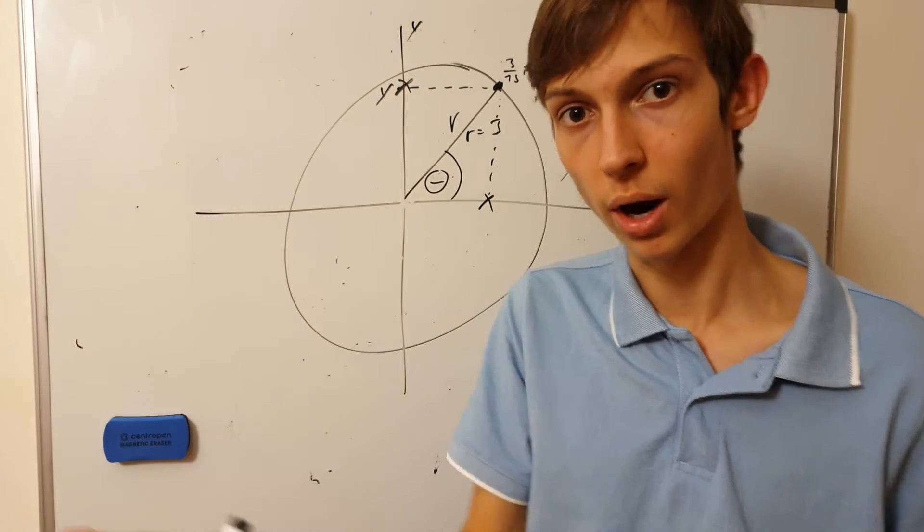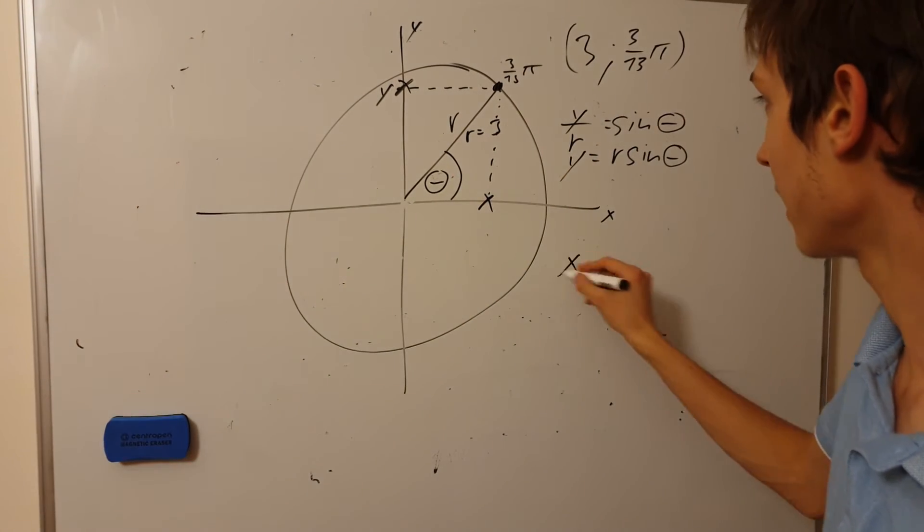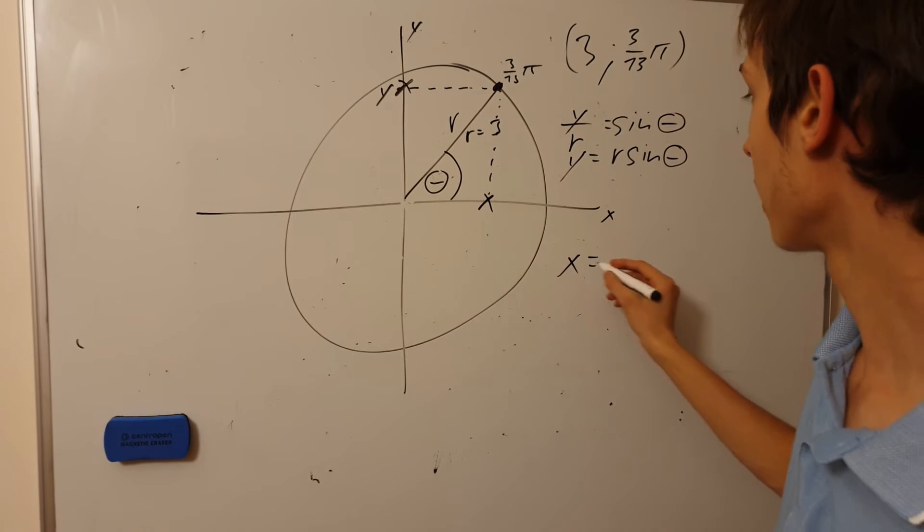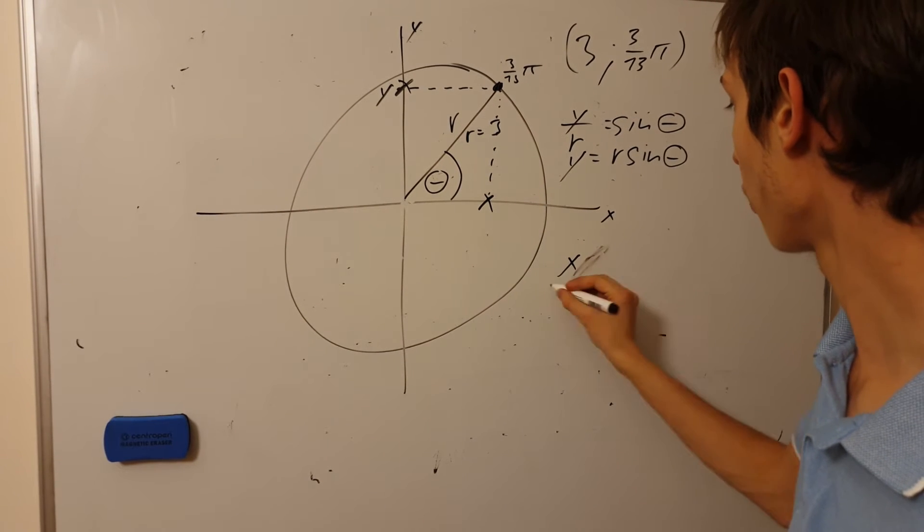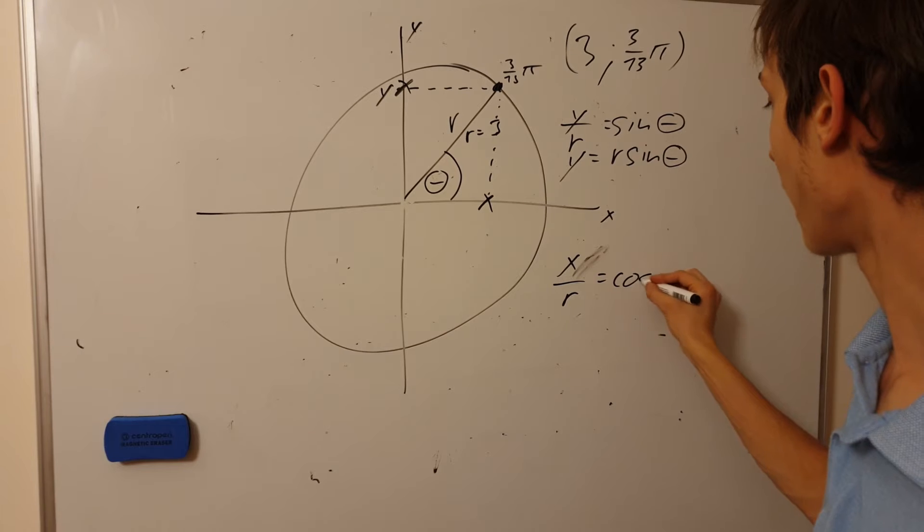So we already can convert it to y. Now, x is cosine, right? Cosine x over the r is cosine of the angle.